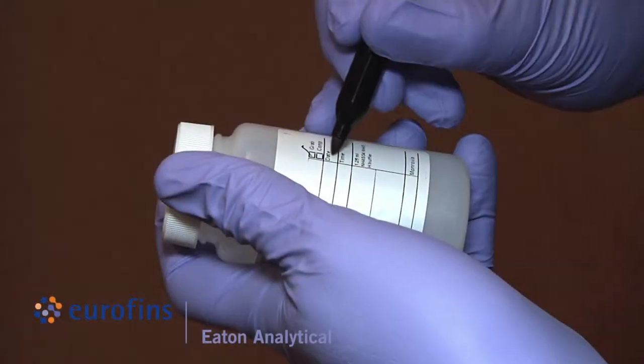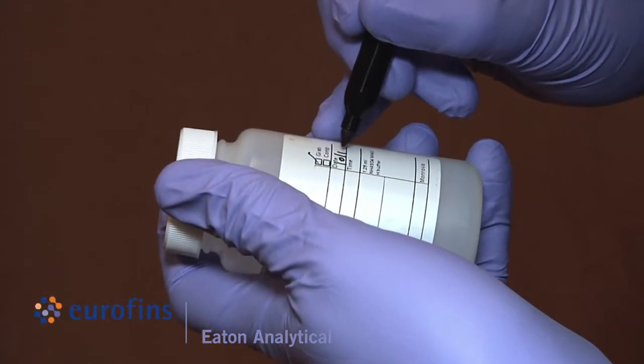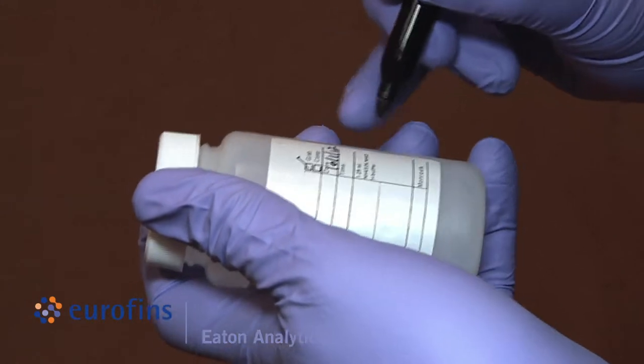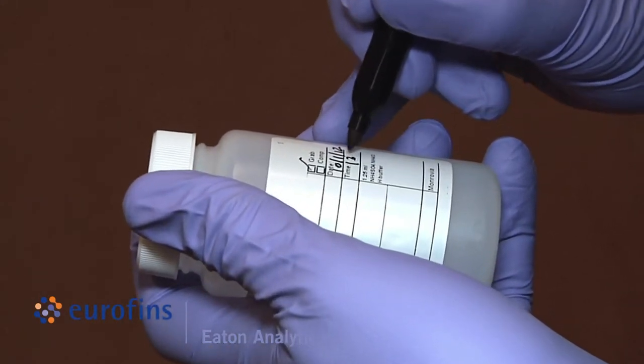Before filling, label the bottles with required information that is not already pre-printed such as the sample ID, date, and time of collection.